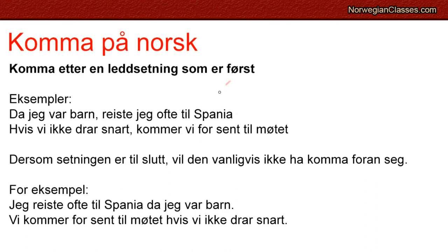Rule 2, which you've probably seen at A2 level: if a subordinate clause comes first, then you have a comma. For example, 'Da jeg var barn, reiste vi ofte til Spania' — you start with 'da', a subordinate clause marker, so after it you have a comma and then verb inversion. Similarly, 'Visst at de ville dra snart' — 'visst at' indicates a subordinate clause, followed by a comma and verb inversion.